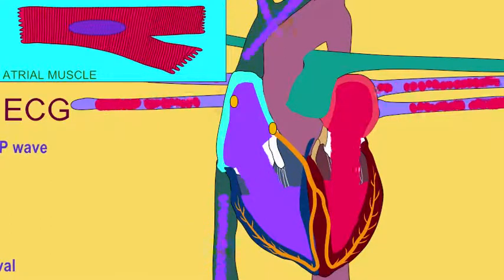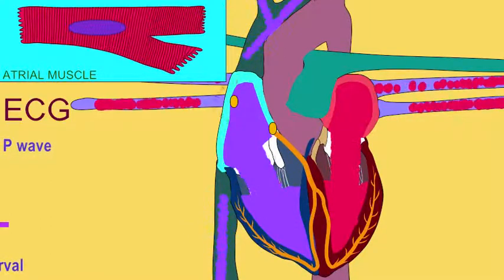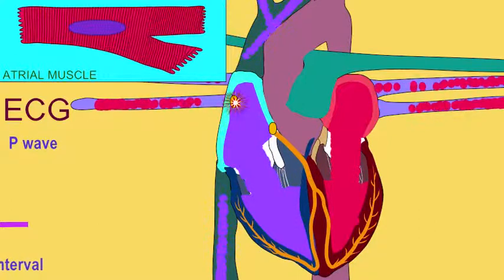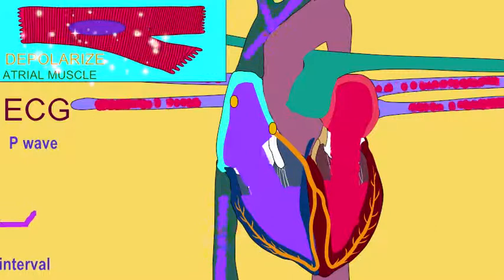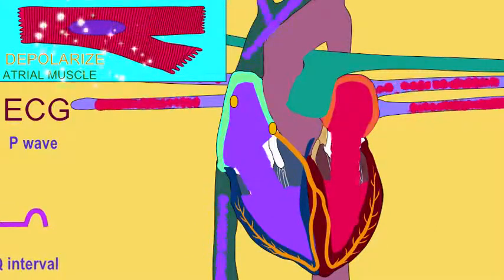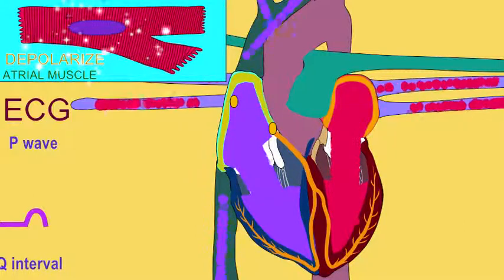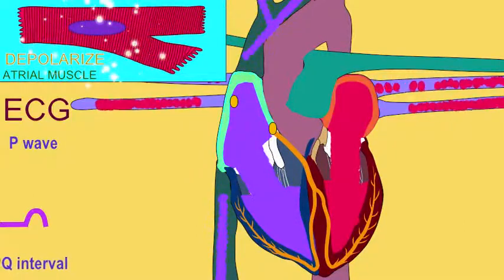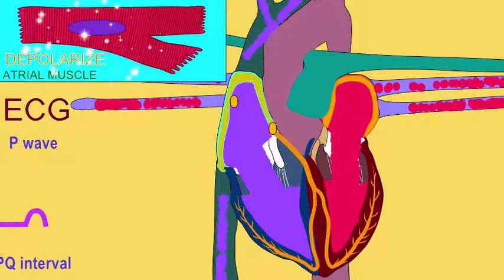During this time, the SA node fires as the first electrical event in a new cardiac cycle. From the SA node, electrical impulses travel throughout the atria, and the atrial cardiac muscle depolarizes, and this is picked up during an ECG as the P-wave. The P-wave represents atrial depolarization.